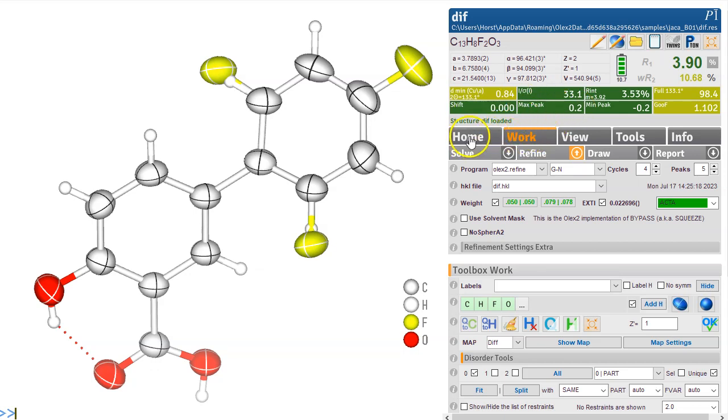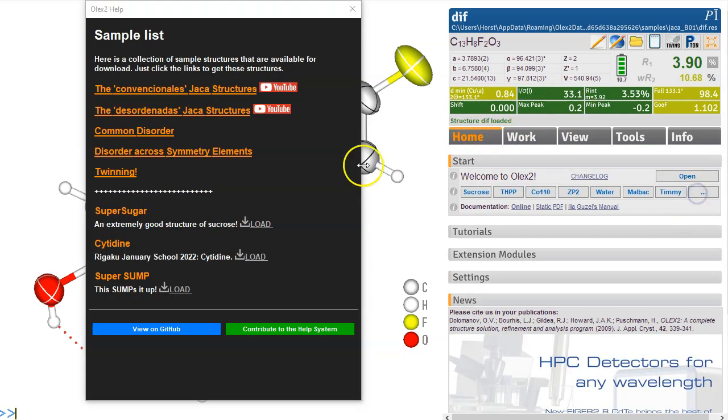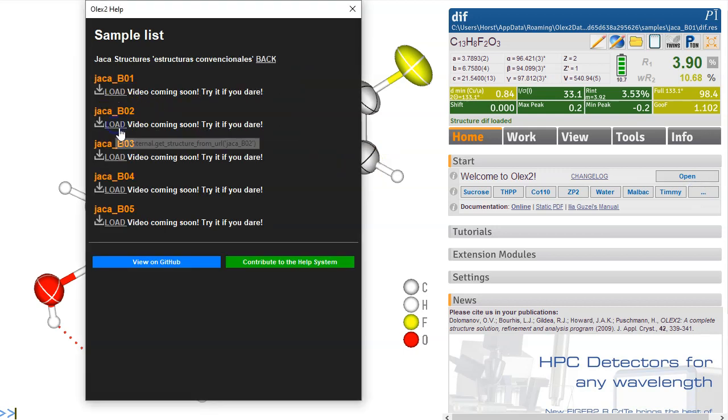On to the second disorder example of the Harker set. Three dots, disorder structures and B02.